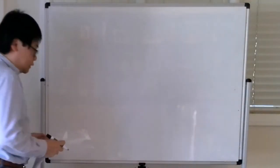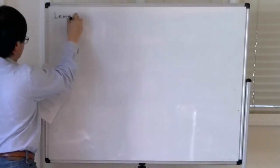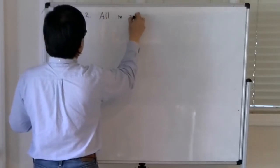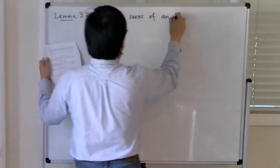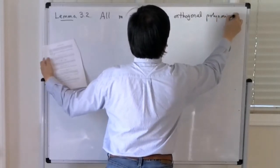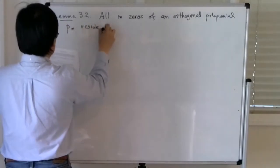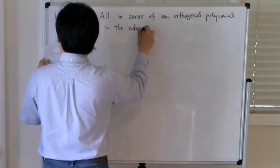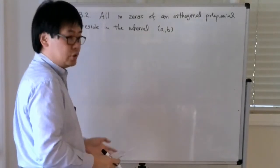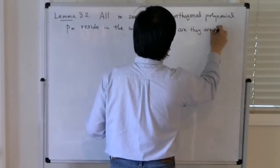Now I'm going to prove something about where the roots of an orthogonal polynomial lie. This is Lemma 3.2, and the claim is that all m zeros of an orthogonal polynomial p_m reside in the interval [a, b], where [a, b] are the limits of integration used to define the inner product, and they are simple, meaning they are not repeated.